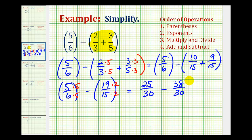And now the last step is to determine this difference. The denominator is going to stay the same. That would be thirty. And then the numerator would be twenty-five minus thirty-eight, which would be negative thirteen.